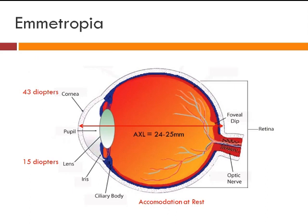Out of 59 diopters, 75 percent belongs to the cornea — meaning almost 43 diopters is that of the cornea and the remaining 15 to 16 diopters is of the crystalline lens. This is assumed when accommodation is at rest. What is accommodation? Accommodation is a phenomenon when a person looks at a near object — the anteroposterior diameter of the lens increases due to contraction of the ciliary body, ultimately increasing the power of the lens.